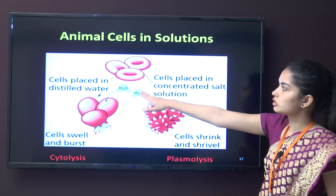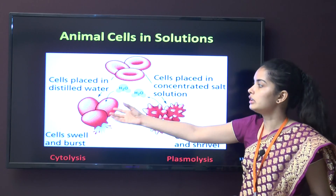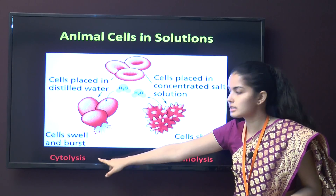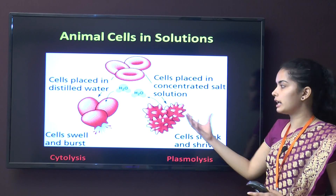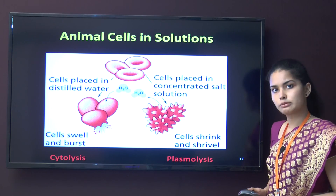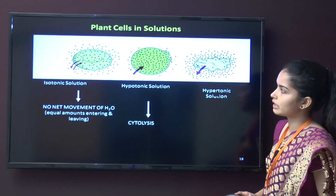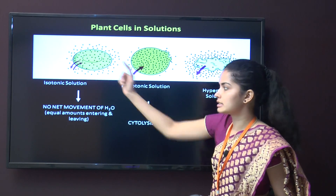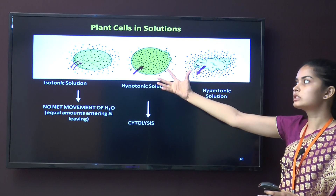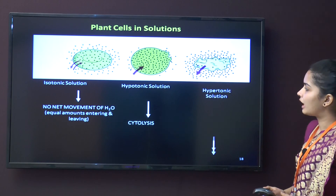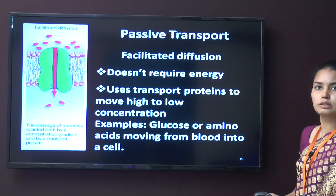For animal cells: in isotonic solution there is no change. In distilled water (hypotonic solution) the cell swells and bursts — this is known as cytolysis. In hypertonic solution, water moves out of the cell and it shrinks — this is known as plasmolysis. The same applies to plant cells: hypotonic causes swelling and bursting; hypertonic causes plasmolysis.